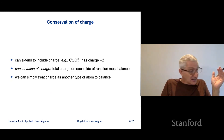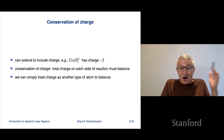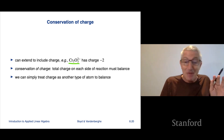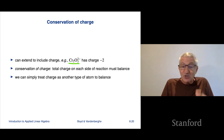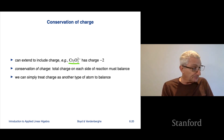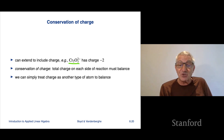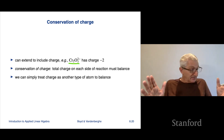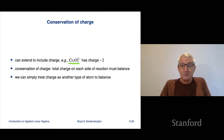You also have conservation of charge. If the molecules are ions, each carries a charge — for example, a 2-minus charge means the molecule has more electrons than protons. Conservation of charge says the total charge must also balance across the equation. Charge simply becomes another type of atom to balance — it's added as one more row.